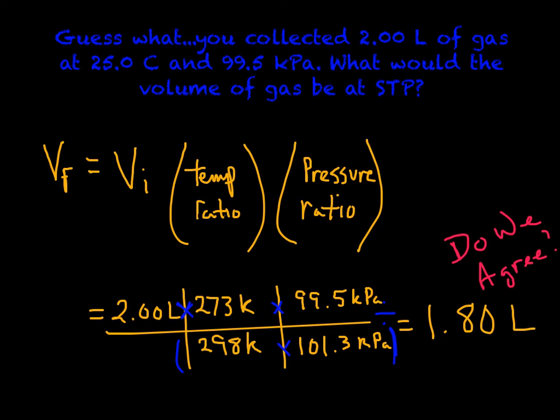My calculator gave me the answer of 1.799658136. And being the smart person that I am, I'm going to apply sig figs. I see three sig figs is what I'm going to be able to keep, and that's what I've got here: 1.80 liters. Do you agree with me? Does your calculator tell you the same thing?